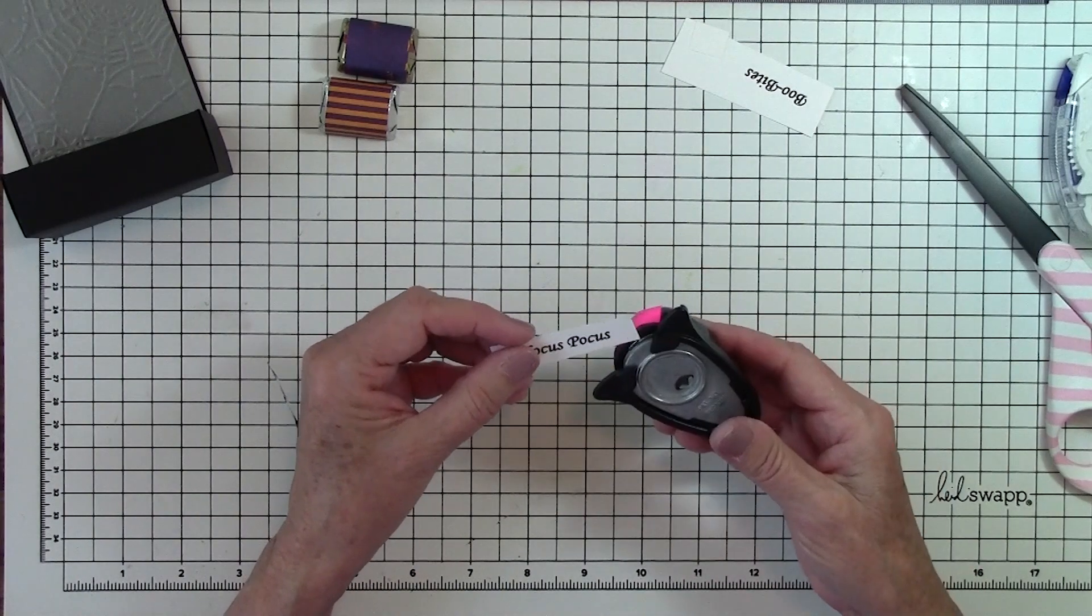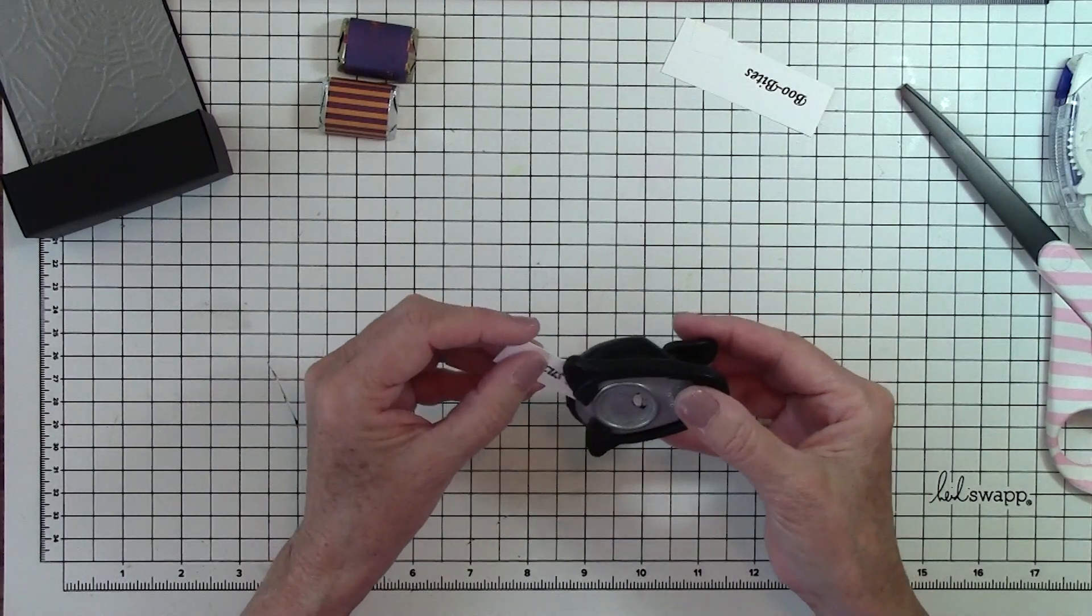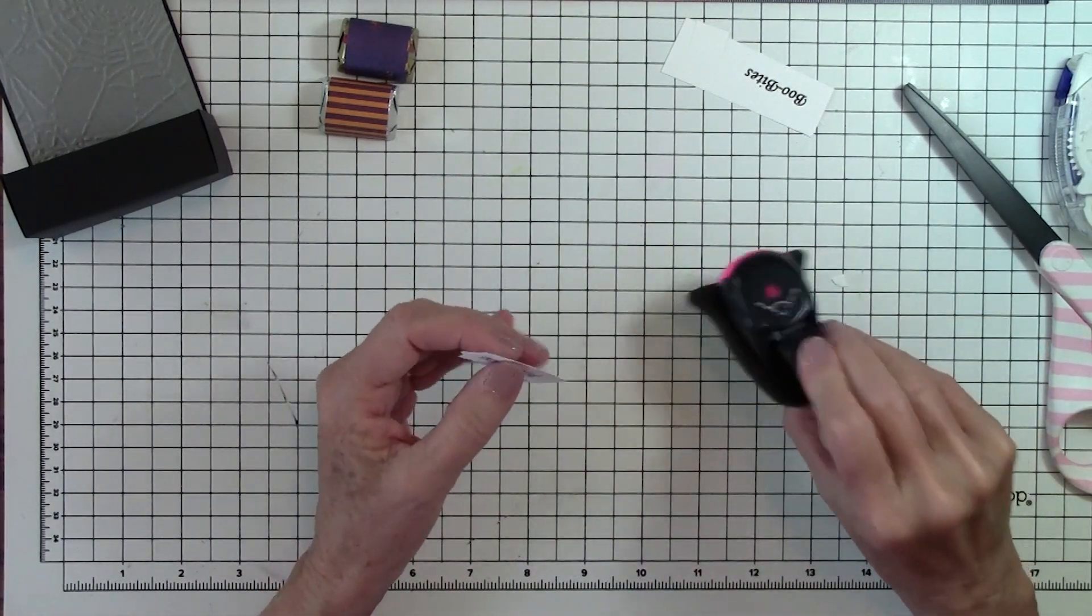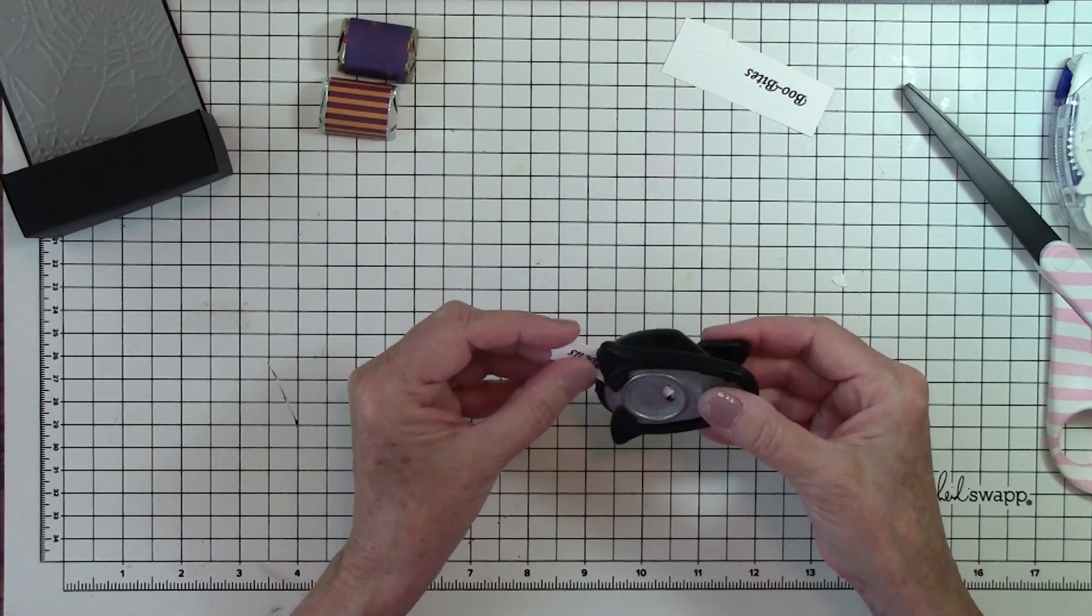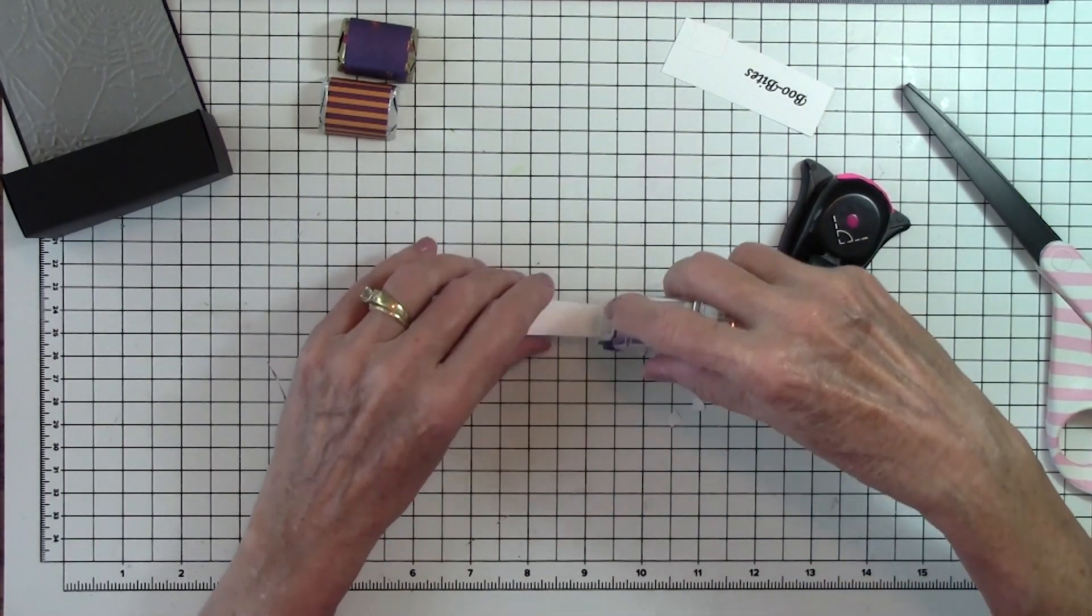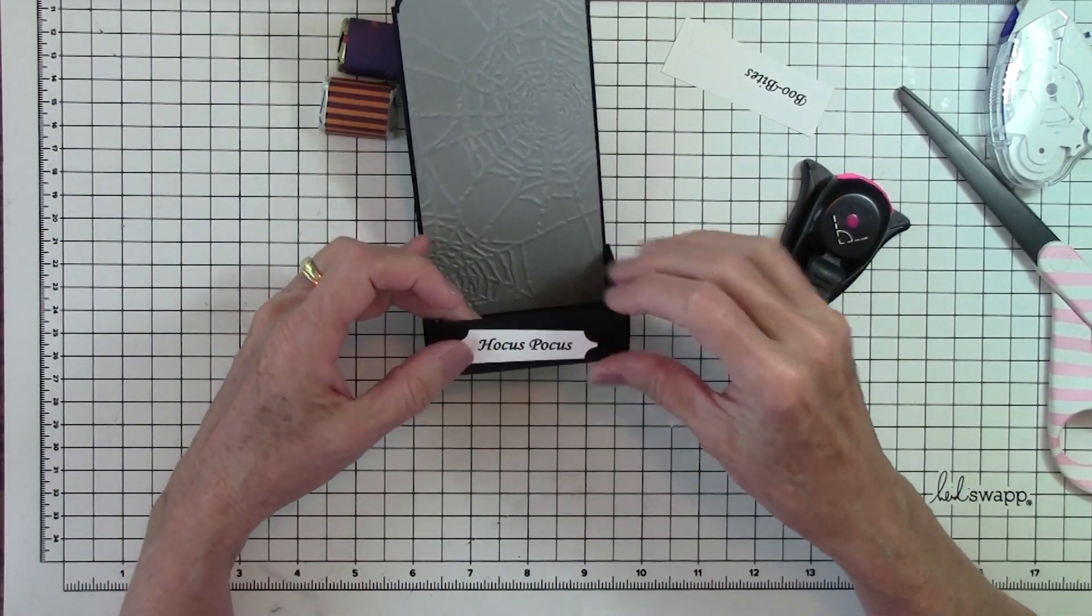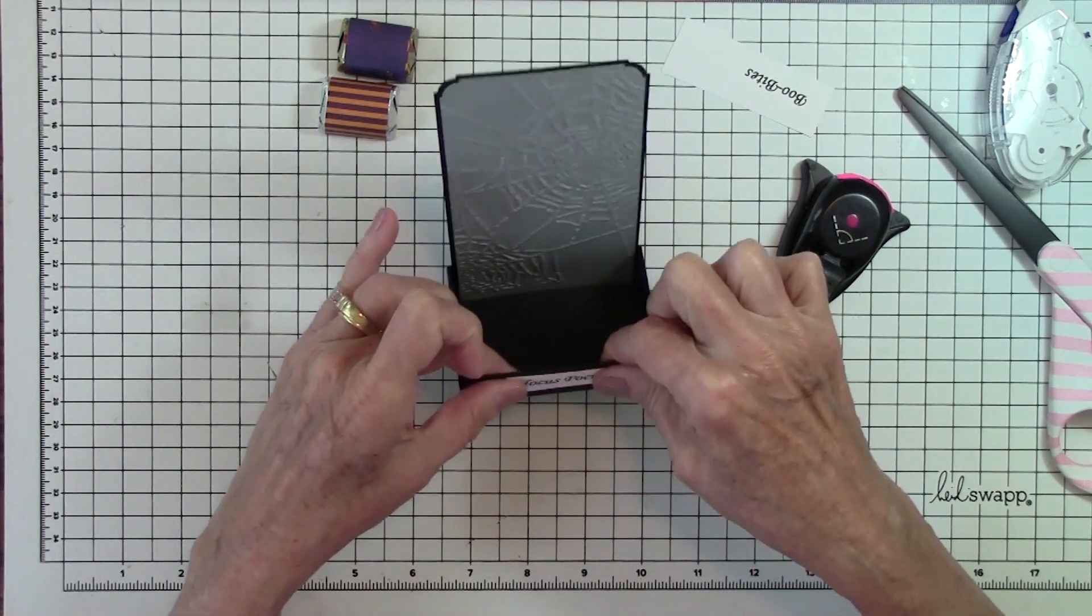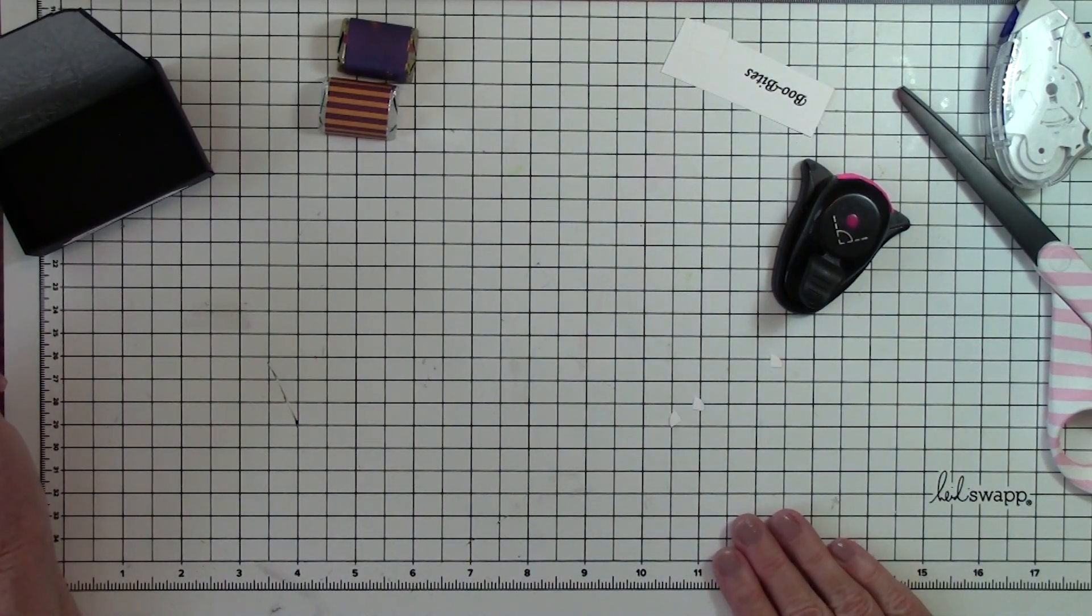I then have a reverse corner rounder. I'm going to put that in. You can use whatever corners you have, or you can even just leave it square. And there's my little shape. And you can either use score tape or adhesive. And I'm going to try and get that pretty well centered. And now we can set that aside until we've made either our pumpkins or our Mr. Pumpkin Head.